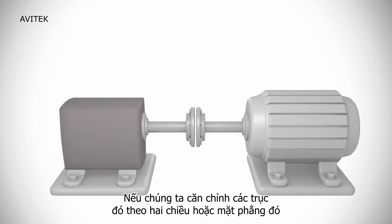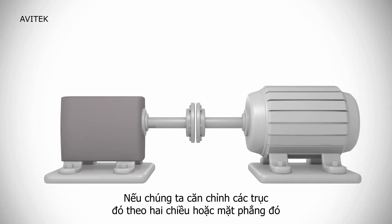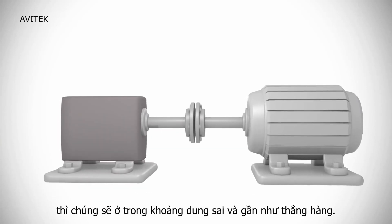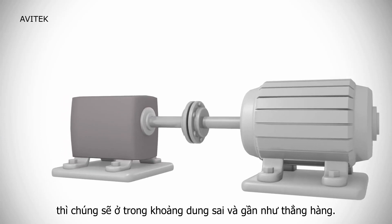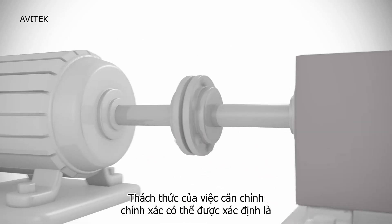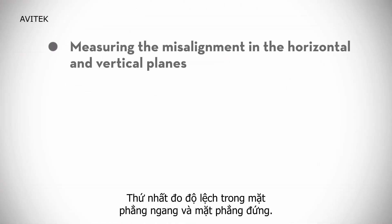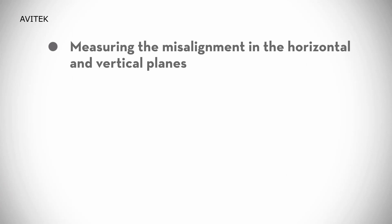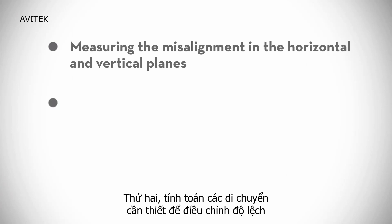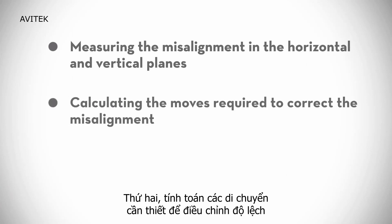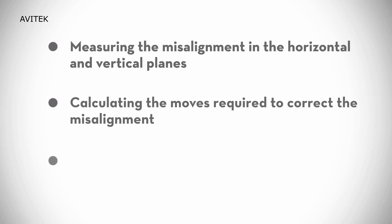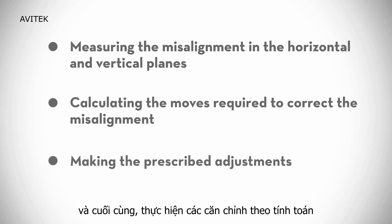If we get the shafts aligned in these two dimensions or planes, they will then be within tolerance and close to collinear. The challenge of precision alignment can therefore be defined as: first, measuring the misalignment in the horizontal and vertical planes; second, calculating the moves required to correct the misalignment; and finally, making the prescribed adjustments.